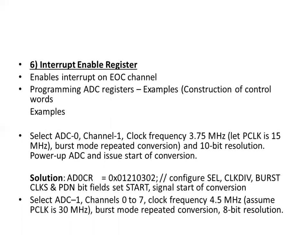Example 1: Select ADC0, channel 1, clock frequency 3.75 MHz (assuming PCLK = 15 MHz), burst mode off (not repeated conversion), 10-bit resolution, power up ADC, and issue start of conversion. Solution: ADC0CR = 0x01221302, configuring SEL, CLKDIV, burst, CLKS, and PDN bits, and setting the START bits to initiate conversion. Example 2: Select ADC1, channels 0 to 7, clock frequency 4.5 MHz (assuming PCLK = 30 MHz), burst mode repeated conversion, 8-bit resolution.